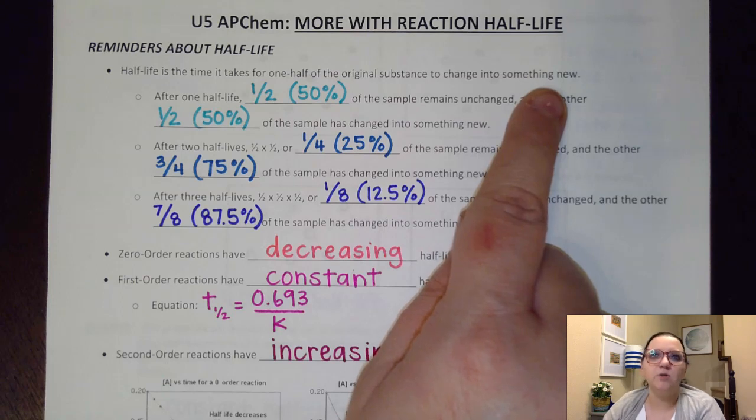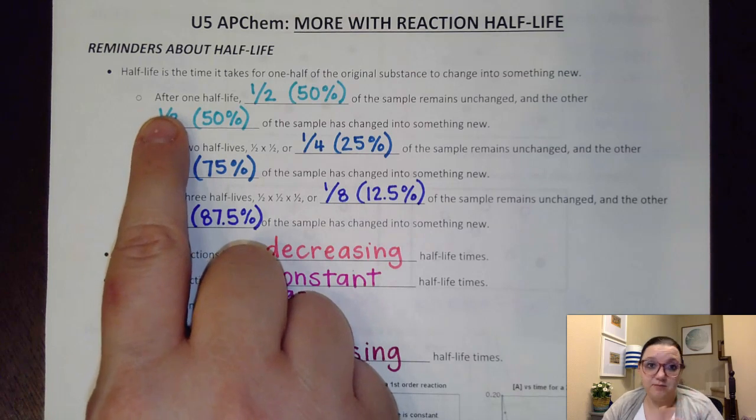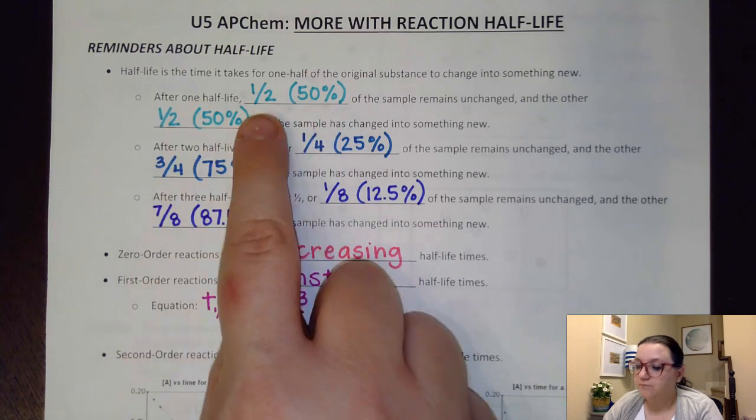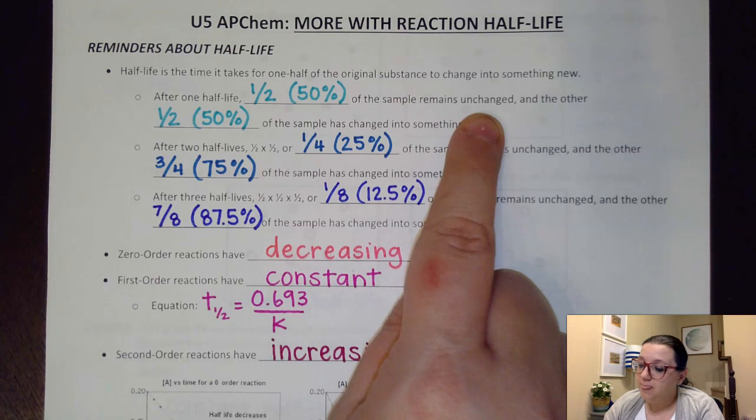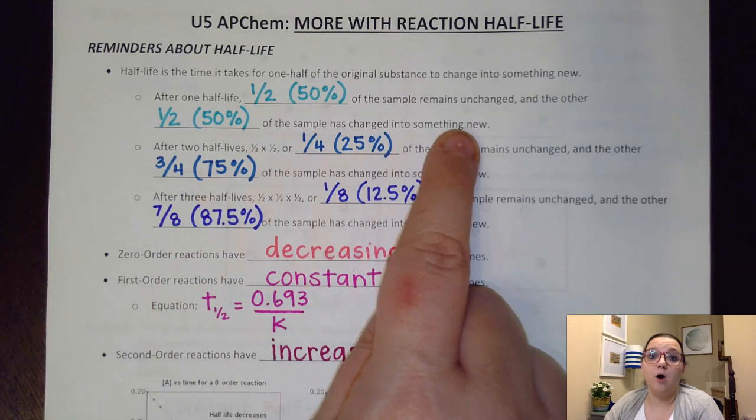Now half-life times could be anywhere from fractions of seconds up to years. It just depends on what reaction you're dealing with and how fast the rate of that reaction is. The faster that reaction progresses, the shorter the half-life time will be. So let's say for a particular reaction, whatever its half-life time may be, one half-life has passed of that time. And so what happens is after that time frame, only one half or 50% of the sample will remain unchanged as our original reactant, and the other half, the other 50%, will have changed into something new, whatever our product ends up being.